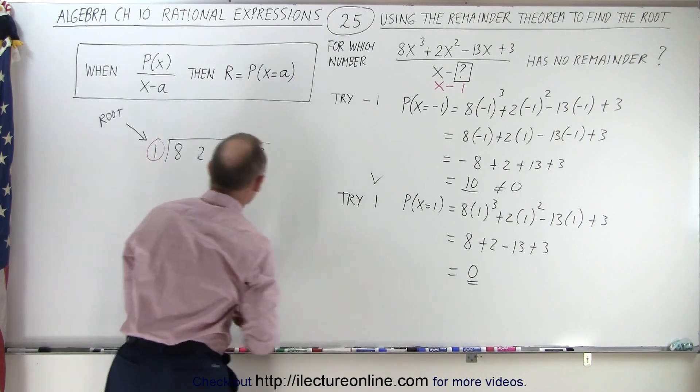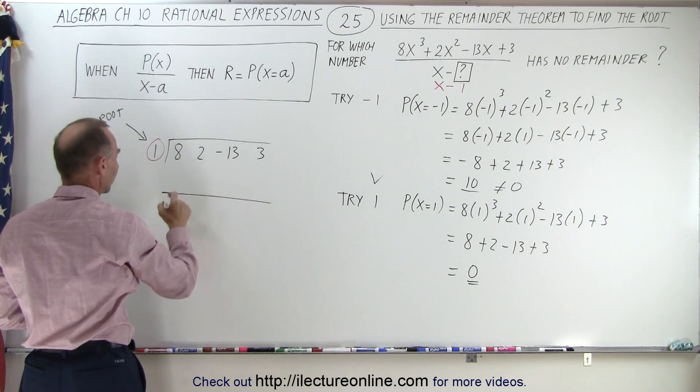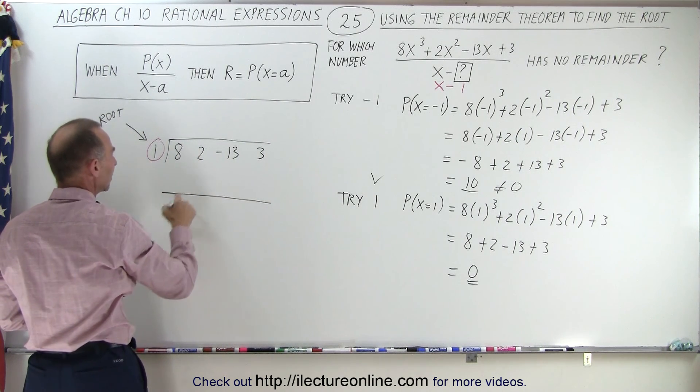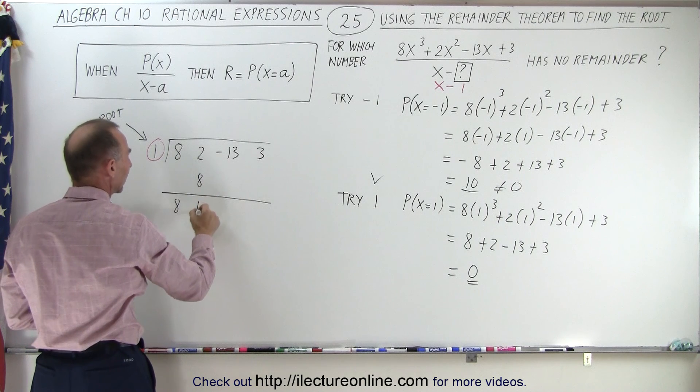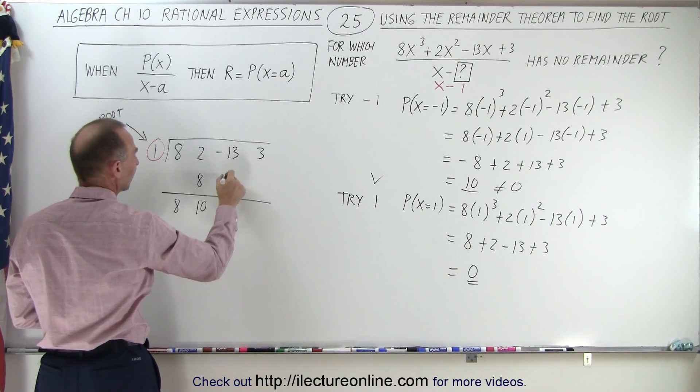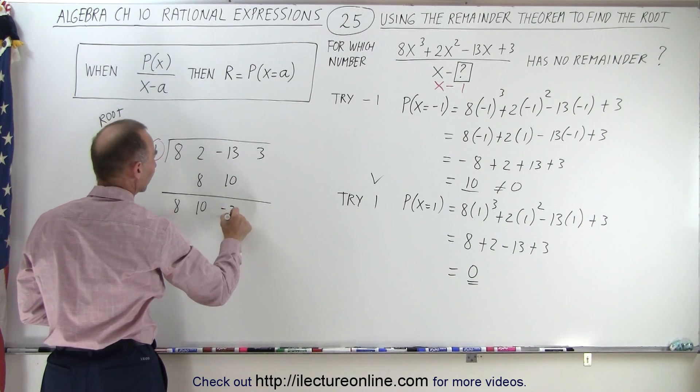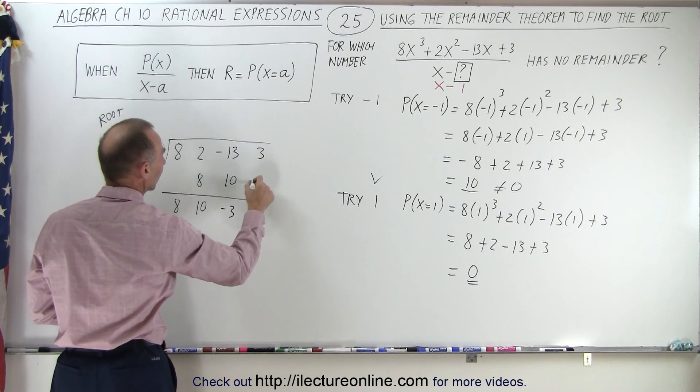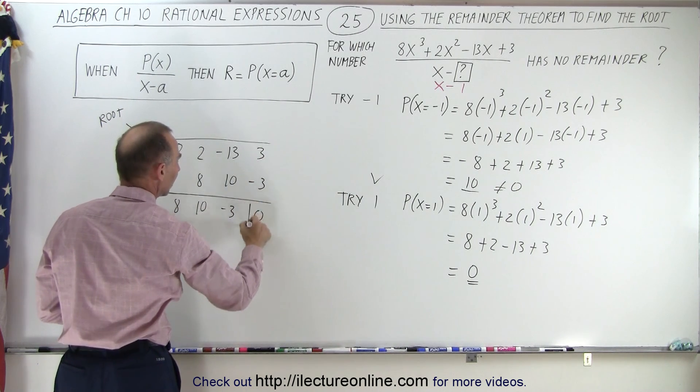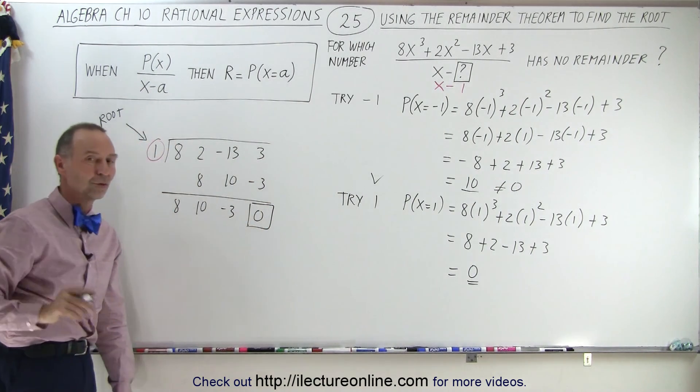We then evaluate that using synthetic division. We drop down the first number, 8. 1 times 8 is 8. We add those together, we get 10. 1 times 10 is 10. We add that together, we get negative 3. 1 times negative 3 is negative 3. We add it together, we get 0. And sure enough, it shows no remainder.